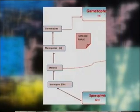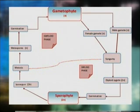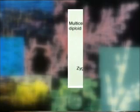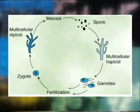Here, the diploid sporophyte produces haploid spores by meiosis which on germination give rise to haploid gametophyte. The haploid gametophyte produces gametes which fuse to form diploid zygote which then directly develops into the diploid sporophyte. Since the two alternating morphological forms or generations are diploid and haploid and occur for almost equal duration during the life cycle, this type of life cycle is called as diplo-haplontic life cycle.